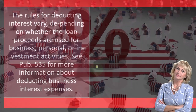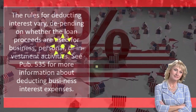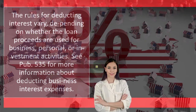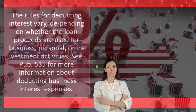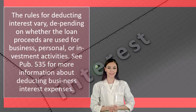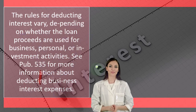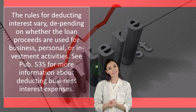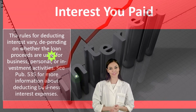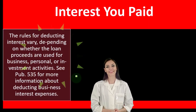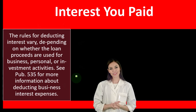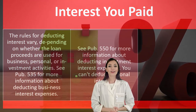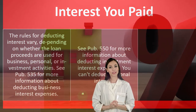The rules for deducting interest vary depending on whether the loan proceeds are used for business, personal, or investment activities. See Publication 535 for more information about deducting business interest expenses. If you had a Schedule C, the interest you paid would be business-related, and you would go to Publication 535 for more information about the possibility of deducting it.